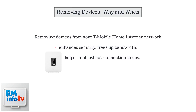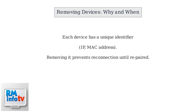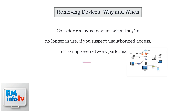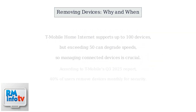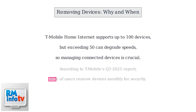Removing devices from your T-Mobile Home Internet network enhances security, frees up bandwidth, and helps troubleshoot connection issues. Each device has a unique identifier like an IP or MAC address — removing it prevents reconnection until repaired. Consider removing devices when they're no longer in use, if you suspect unauthorized access, or to improve network performance. T-Mobile Home Internet supports up to 100 devices, but exceeding 50 can degrade speeds, so managing connected devices is crucial. According to T-Mobile's Q3 2025 report, 40% of users remove devices monthly for security.